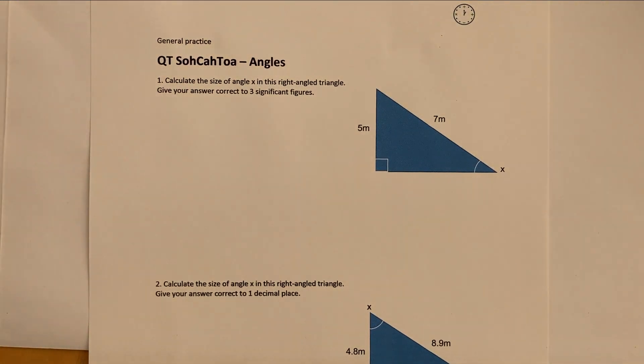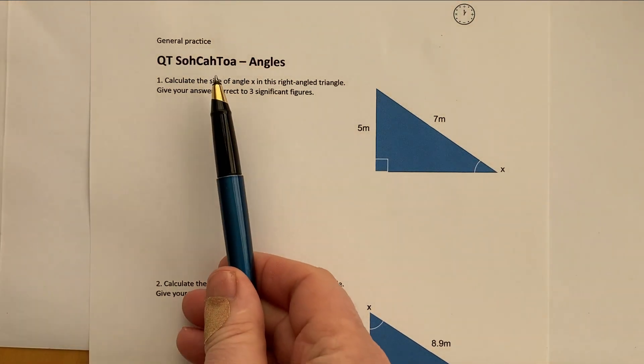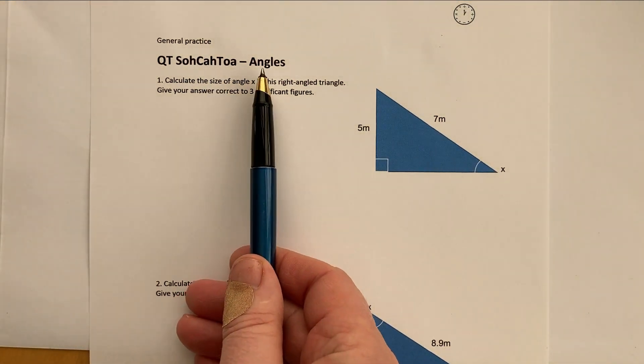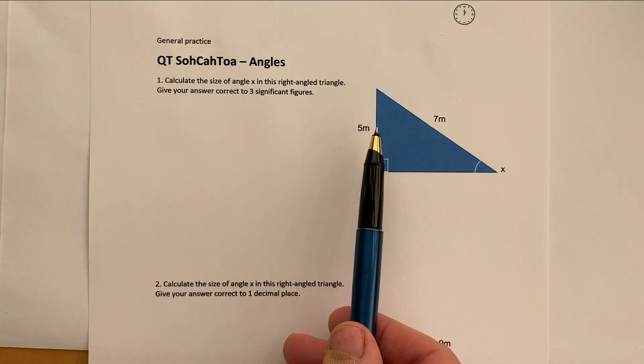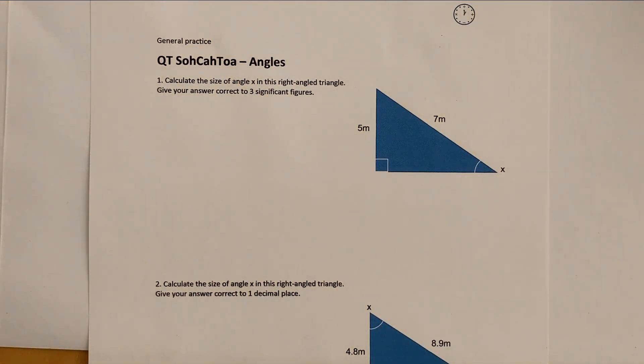Hi, in this video we're going to be looking at using SOH CAH TOA to work out the angle in a right angle triangle. If you follow the link below in the description, you'll be able to go and have a go at some of the questions there and download this particular worksheet.